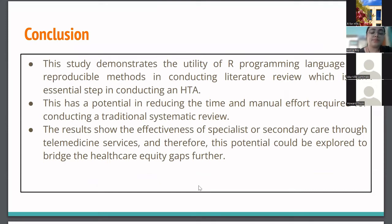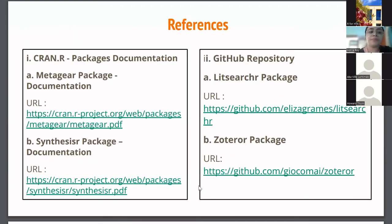To conclude, this study demonstrates the utility of R programming language and reproducible methods in conducting literature reviews, which is an essential step in conducting an HTA. This greatly has potential in reducing the time as well as manual effort required to conduct a traditional systematic review. The results show the effectiveness of specialist or secondary care through telemedicine services, and therefore this could be explored to bridge equity gaps in hard-to-reach areas in India. Here are my references — the MetaGear package and the synthesisr package can be found on CRAN, and GitHub repository links for litsearchr and the Zotero R package are provided.